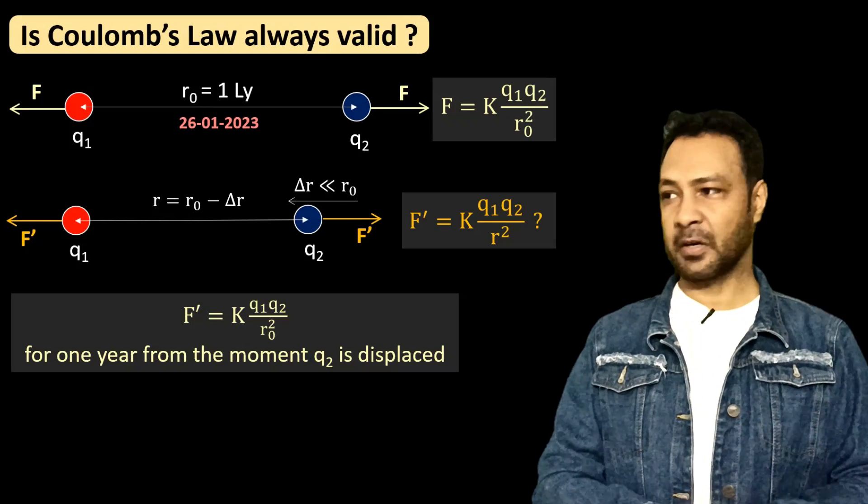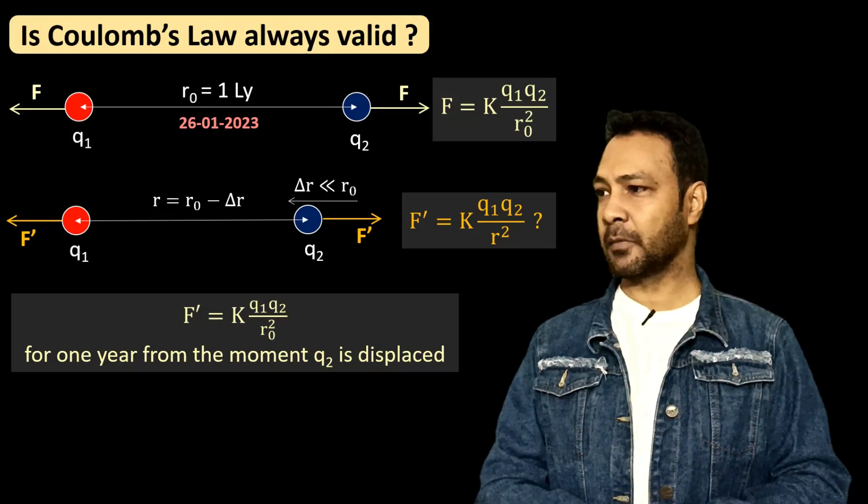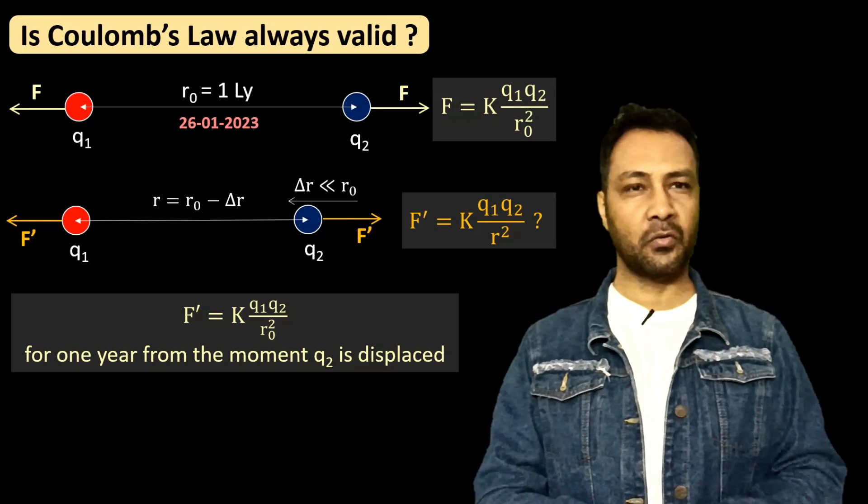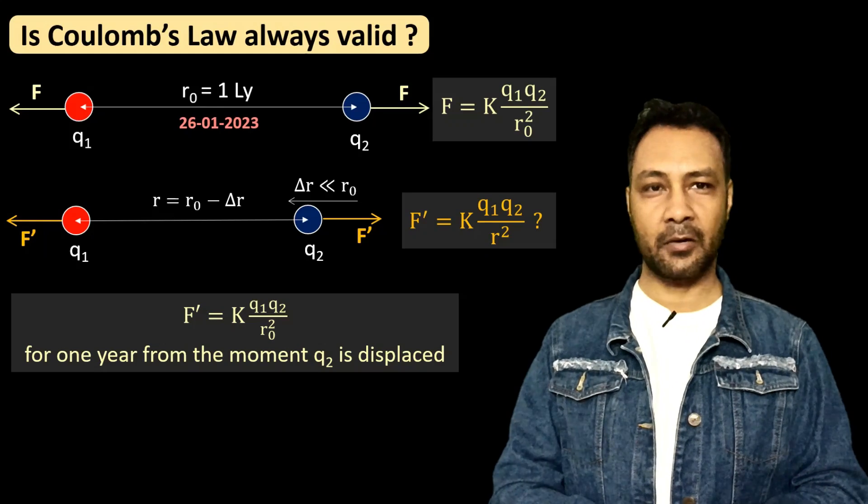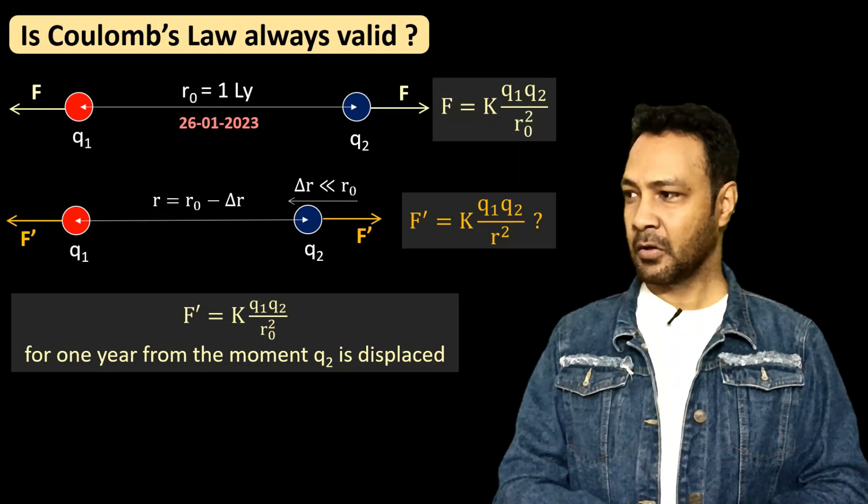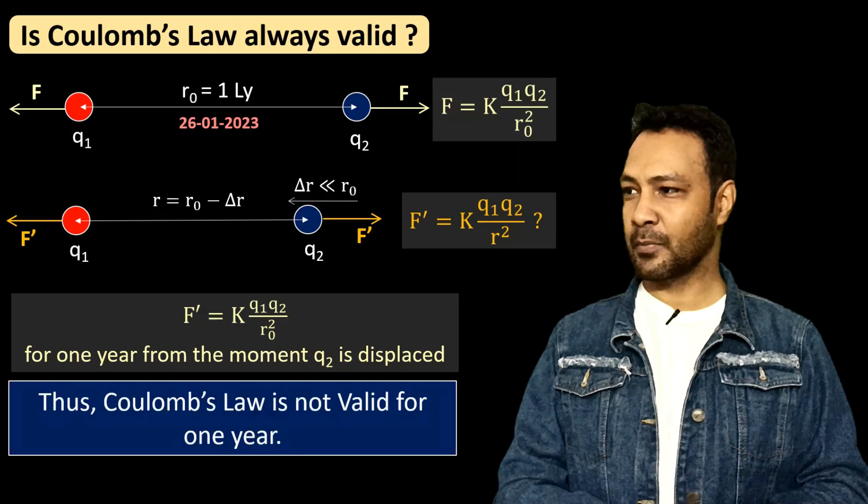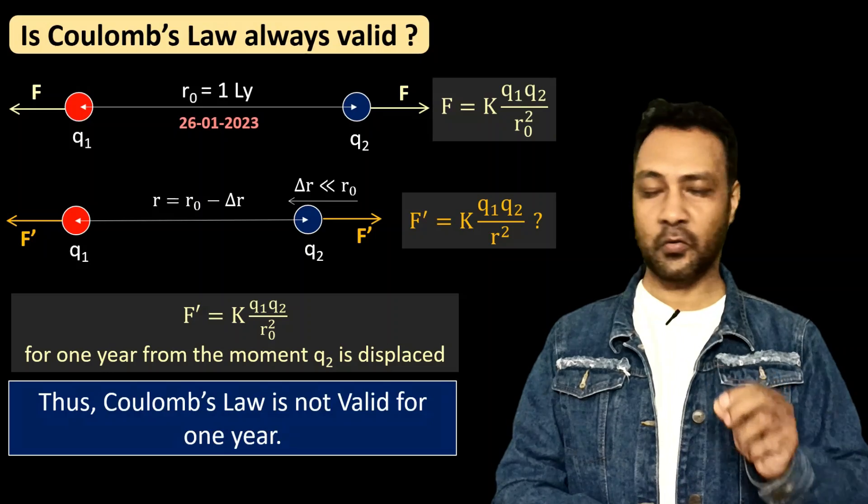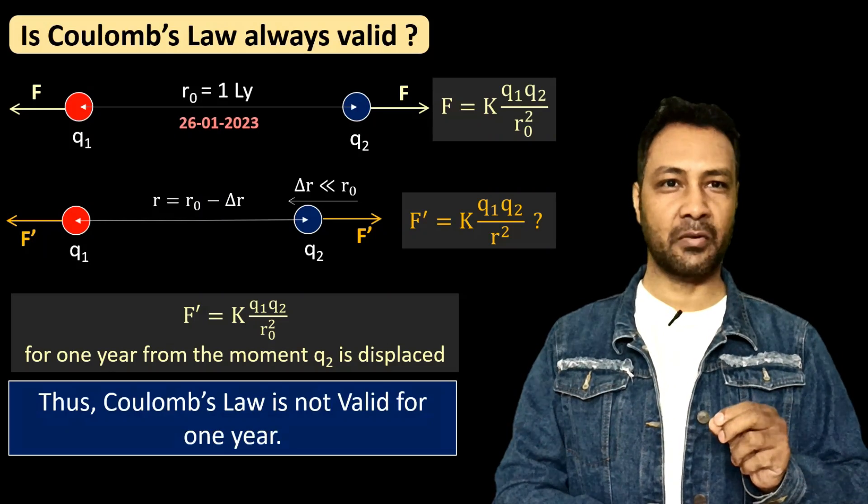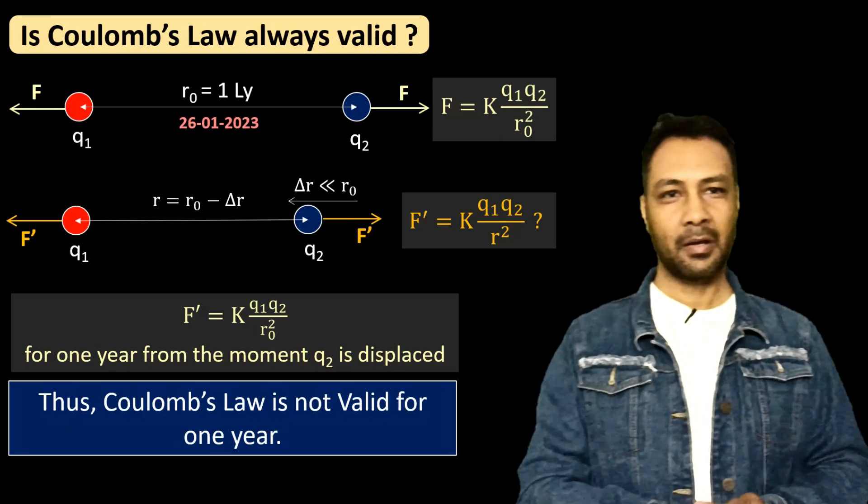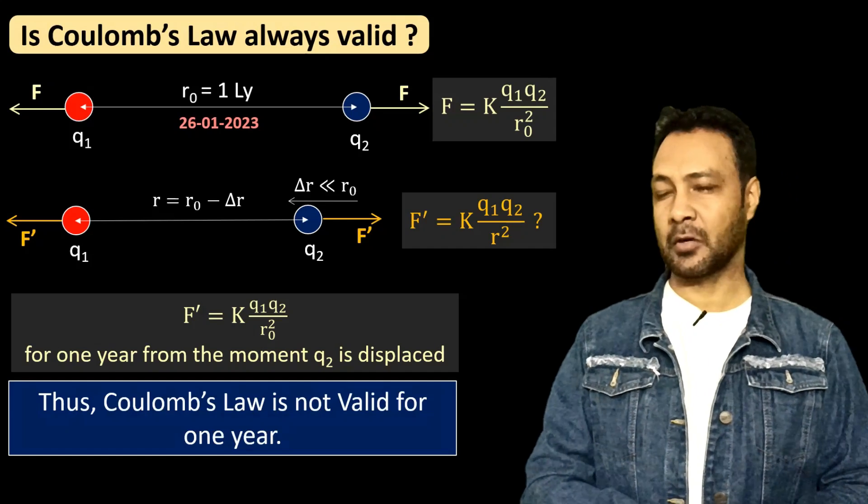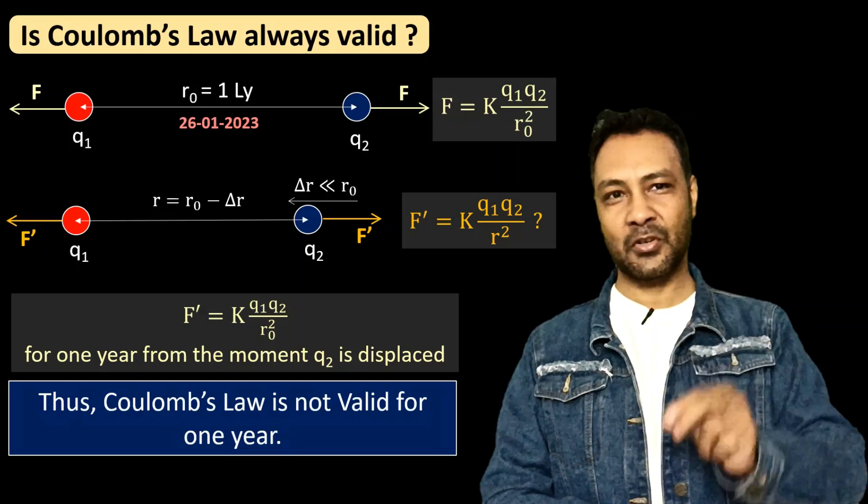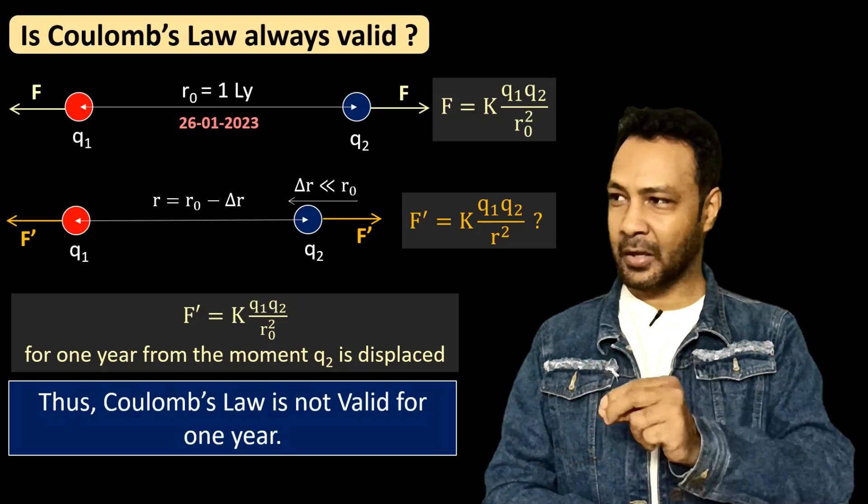distance has changed but still for the whole one year the magnitude of force between q1 and q2 will remain as k q1 q2 by r₀² which was before displacing. So we can say that this Coulomb's law was not valid for the whole one year. So right now from 26 January 2023 till 26 January 2024, Coulomb's law will not be valid.